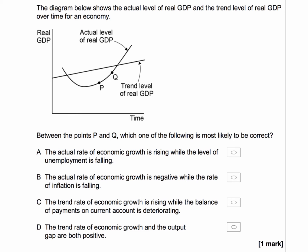So between the points P and Q, which one of the following is most likely to be correct? We're looking for the most correct right answer and we'll go through each answer in turn. What about A? The actual rate of growth is rising while the level of unemployment is falling.